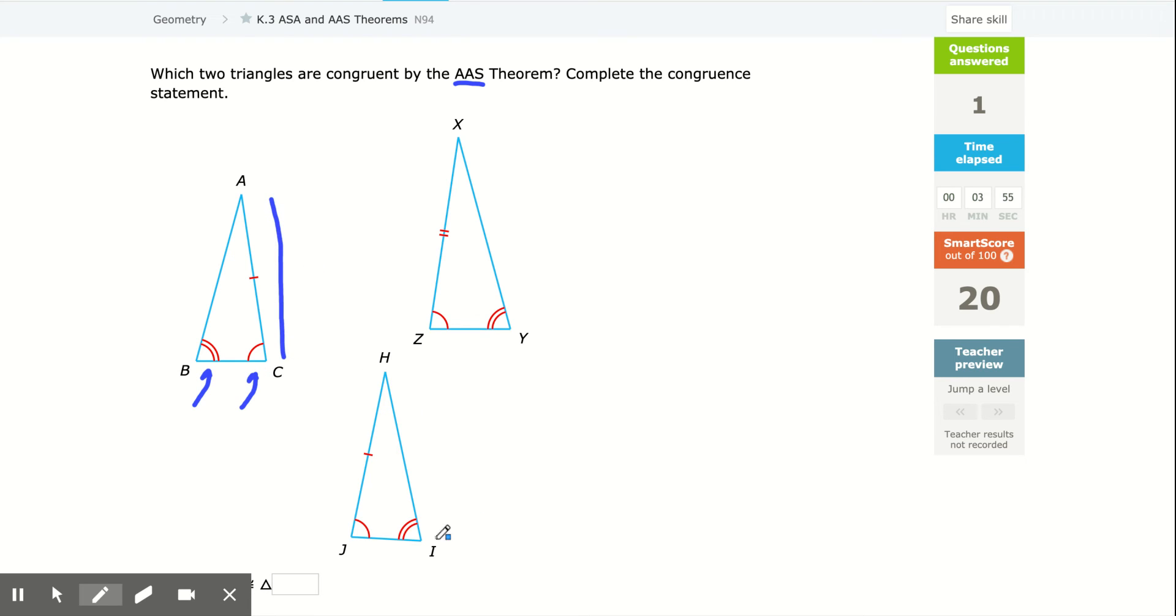Now we've got to find one that corresponds to that. I need a double angle, a double angle, here's a double angle, then the next angle is a single arc angle, and then a side. So we have angle, angle, side, angle, angle, side.